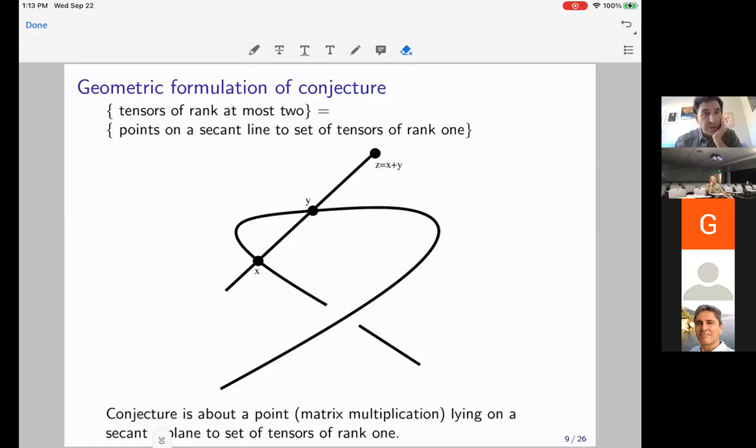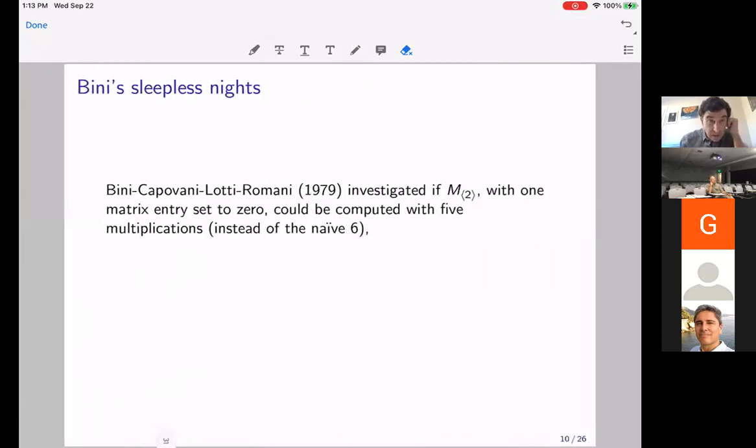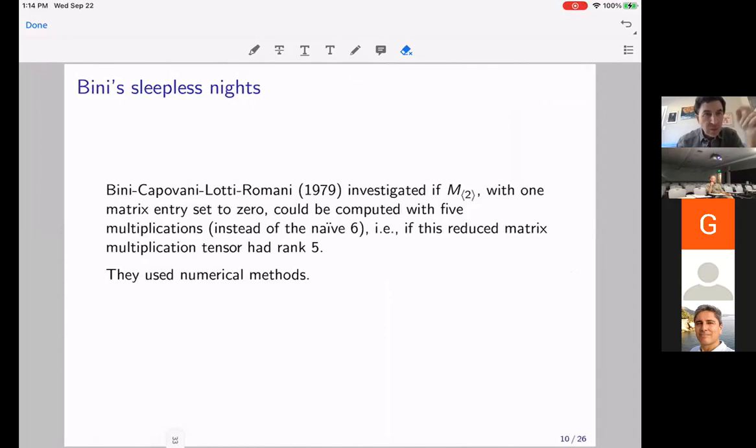Now, I'd like to describe this a little bit more geometrically. So, I don't have a 64-dimensional blackboard, so I'm just going to draw a curve in space. And I want you to imagine that this curve represents the set of rank one tensors sitting inside this large vector space of all tensors. So these are the rank one bilinear maps sitting in the space of all bilinear maps. Now, what does it mean for a tensor to have rank at most two? Well, you take a tensor of rank one, and you take another tensor of rank one, you add them together.